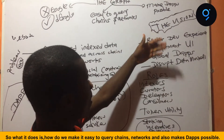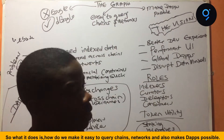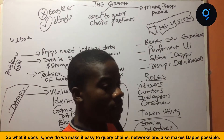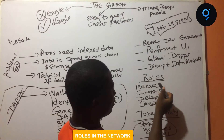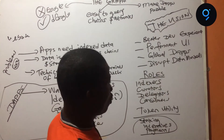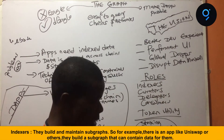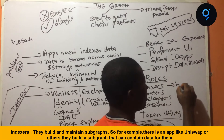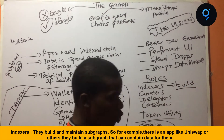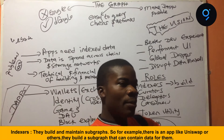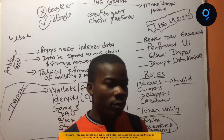So what it does is make it easy to query the chain and network. Let's talk about the roles in indexed data before we talk about that vision. There are four participants in the network. We have the indexers — the indexers are actually the ones who help with building subgraphs. So let's take, for example, an app like Uniswap — they build the subgraphs that can contain data for them.